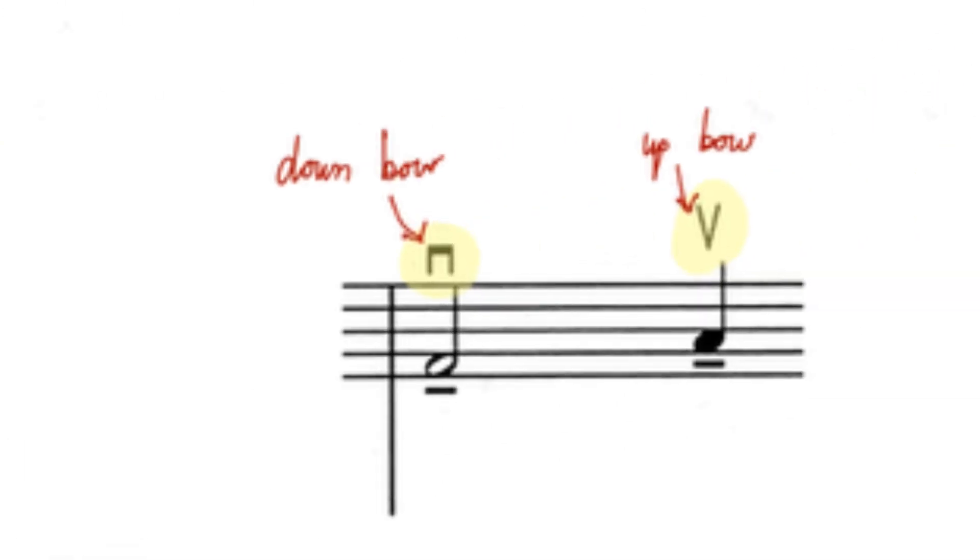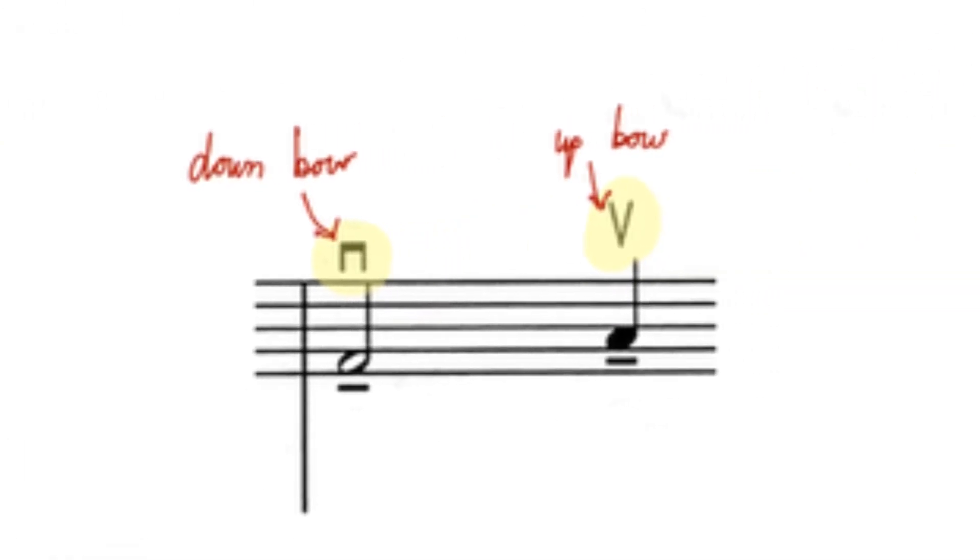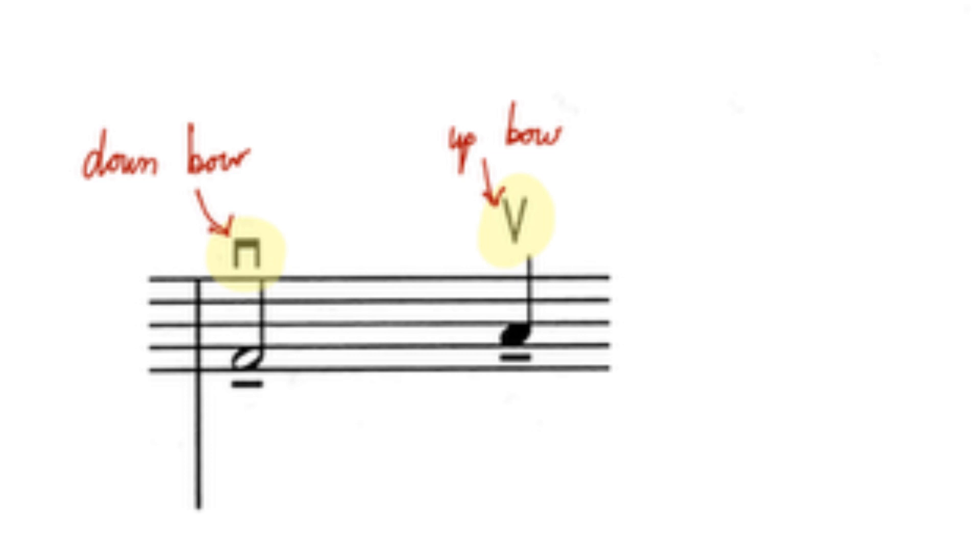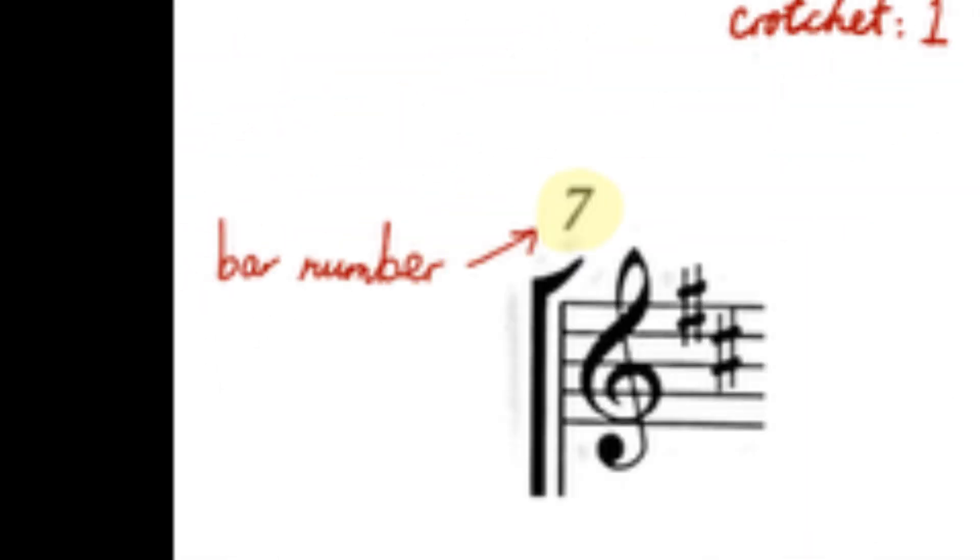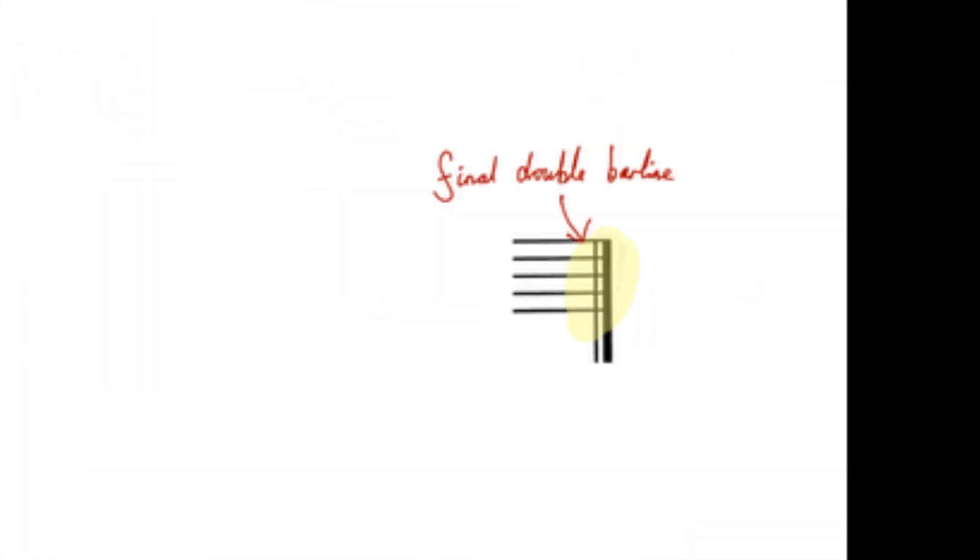The square-like shape on this note means to play a down bow, and the V shape on this note means to play an up bow. The numbers above the notes are fingerings, and the numbers at the beginning of each line are bar numbers. The piece finishes with a final double bar line to indicate the end of the piece.